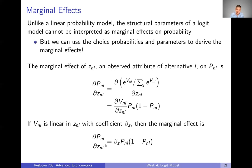The linear probability model can be nice because it directly gives us marginal effects. But the logit model is actually nicer in some sense, because it gives us the underlying structural parameters we care about, and we can use those structural parameters to get the marginal effect as well. So we can get the same thing as the linear probability model plus more.